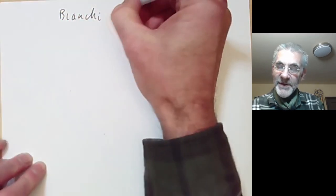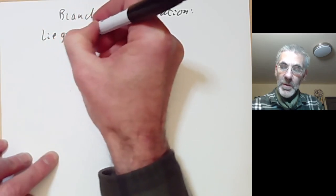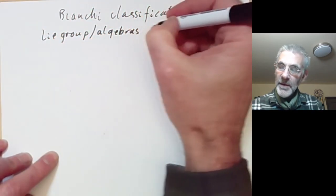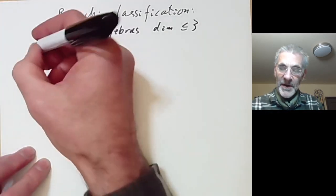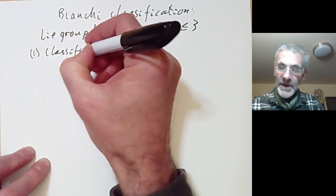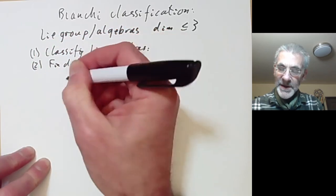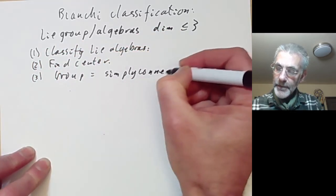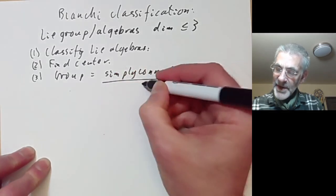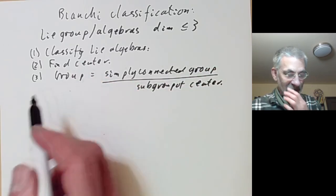This lecture is part of an online course on Lie groups and will be about the Bianchi classification — a classification of Lie groups or algebras of dimension at most three. The idea for classifying Lie groups is as follows: first we classify the Lie algebras, then we find the centre of these Lie algebras. The Lie groups are just the simply connected group divided by some discrete subgroup of the centre. So once we've found the Lie algebras, the groups are fairly easy to find.